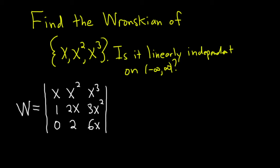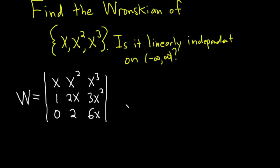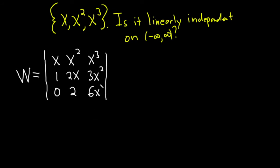Now we're going to compute the determinant. There are a couple of ways to do this — using cofactor expansion there are six different options. You can expand along the first row, second row, third row, or first column, second column, third column. I'm going to expand along the first column.